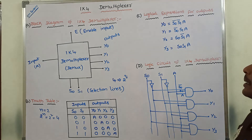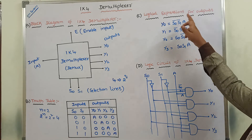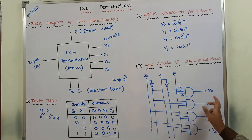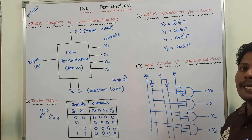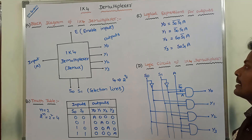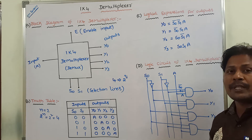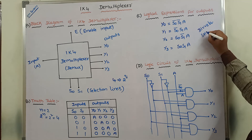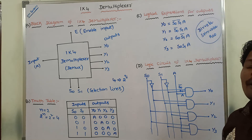This is the simple explanation of 1x4 demultiplexer — the block diagram, the truth table, the logical expressions for the four outputs Y0, Y1, Y2, Y3, and by using those logical expressions, the logic circuit of 1x4 demultiplexer. I hope all of you understood this concept. If you did, please like this video, share it with your friends and classmates, and don't forget to subscribe to my YouTube channel, Divvela Srinivasrao, and click on the bell icon to get future updates. Thank you all for watching this video.